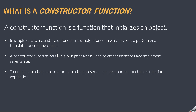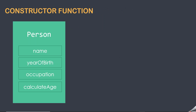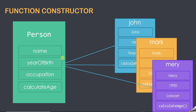To define a function constructor, a function is used — it can be a normal function or function expression. Let's say we have created this Person function constructor with name, year of birth, and occupation properties and a calculateAge method. This Person function constructor will act as a blueprint for creating objects, and using this blueprint we can create several objects. Here I'm creating John, Mark and Mary objects from this Person function constructor, and they also have the name, year of birth, occupation property and the calculateAge method.